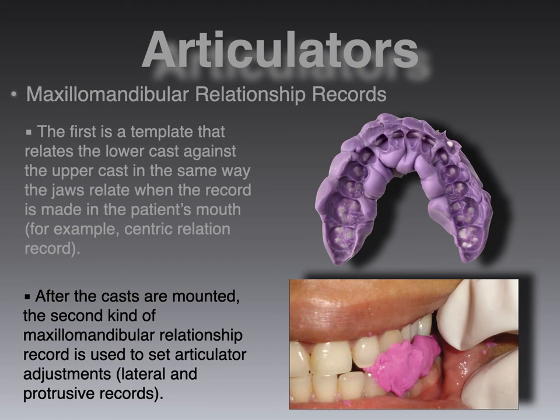After the centric relation bite is achieved, the casts are then mounted with the second kind of maxillomandibular relationship record, which is used to set the articulator adjustments. We're looking at records taken during lateral left and right excursions and then a protrusive excursion. So in actuality, if you count them individually, you would have a centric relation record, a right lateral record, a left lateral record, and a protrusive record — really four separate bites that you would use to mount and adjust the articulator accordingly.